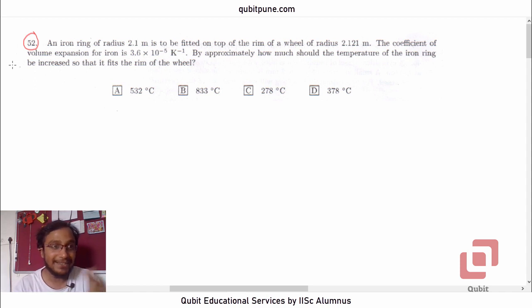So let's read the problem carefully and use the values. An iron ring of radius 2.1 meter is to be fitted on top of the rim of a wheel of radius 2.121 meters. The coefficient of volume expansion of iron is 3.6 into 10 raised to negative 5 per Kelvin. By approximately how much should the temperature of the iron ring be increased so that it fits the rim of the wheel?